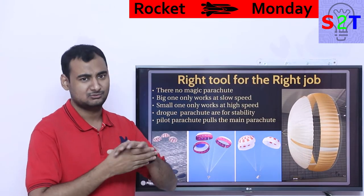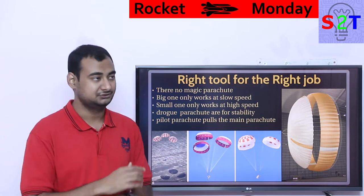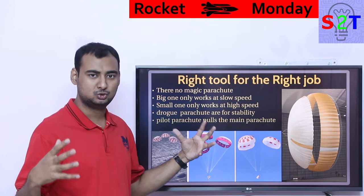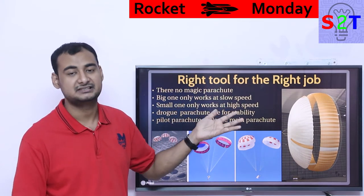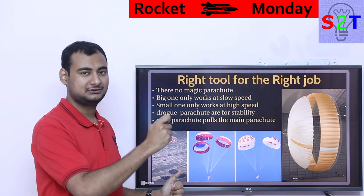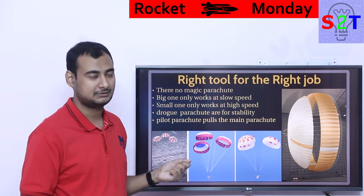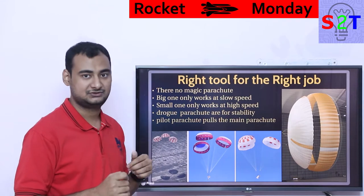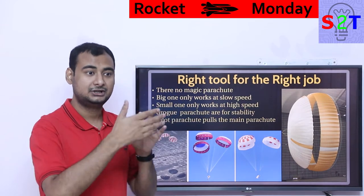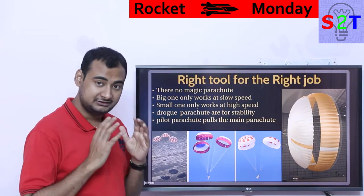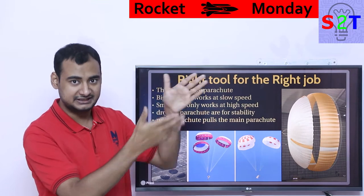This brings up a universal law: right tool for the right job. There is no magic parachute that works well on both Mars and Earth — you flat out cannot do that. Big, huge parachutes are generally good for slow speed, roughly from 500 km/h down to zero. The moment you deploy that kind of big parachute at sonic speed — above 1,000 km/h — it will literally tear apart, or tear apart your capsule. So we use small parachutes for high speed, and different parachutes for different needs.